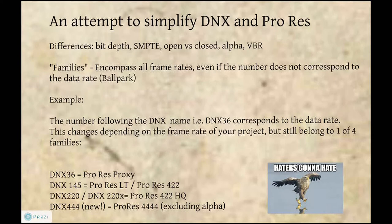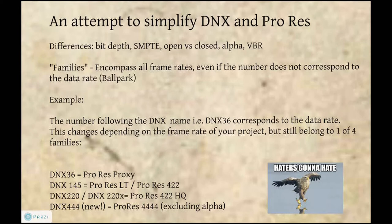In terms of analogies: if you're used to ProRes Proxy, DNxHD 36 is the way to go. There's no exact equivalent to DNxHD 145 — ProRes LT is a little lower quality and ProRes 422 is a little higher. My rule of thumb is DNxHD 145 and ProRes 422 are both your baselines for broadcast quality. DNxHD 220 (8-bit) and DNxHD 220X (10-bit) would be analogous to ProRes 422 HQ. And the new DNxHD 444 — highest quality in Avid that's not uncompressed — would be analogous to ProRes 4444, excluding alpha.